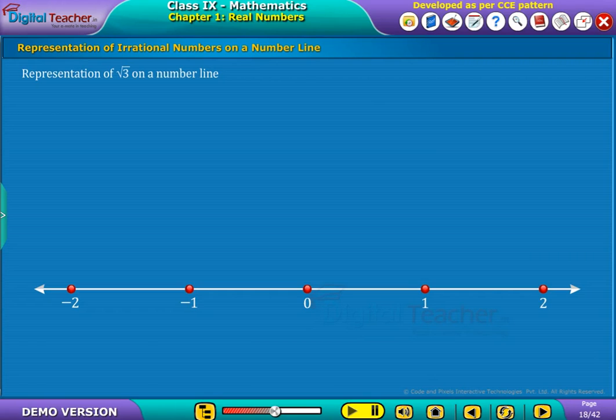Now, with the same distance from 0 to 1, draw another line with a right-angle at 1, and then join these points as shown.